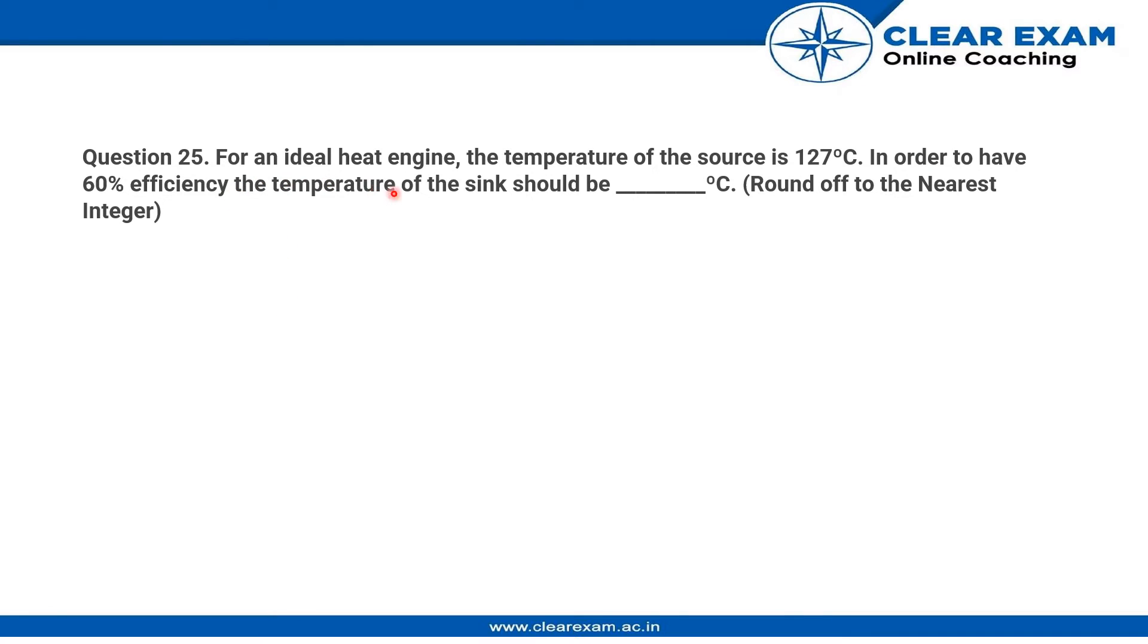The question says: for an ideal heat engine, the temperature of the source is 127°C. In order to have 60% efficiency, the temperature of the sink should be equal to what? It is given to us as an ideal heat engine.